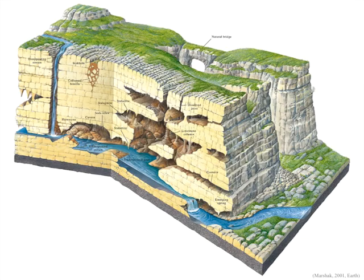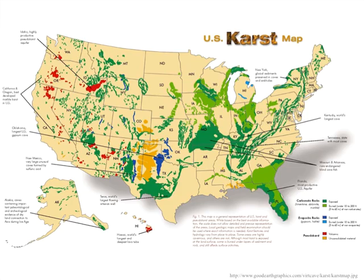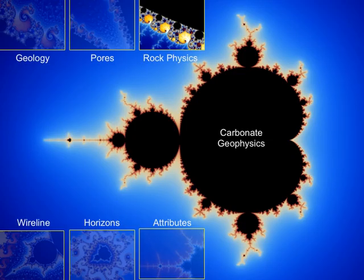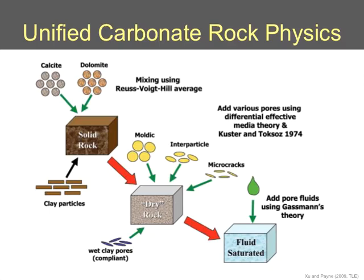One key feature of carbonates is that they are soluble and can be dissolved to form large cave systems and karst topography. This diagram shows many features of karst topography. When dealing with limestones around the world we are often looking at a paleo-karst landscape, which can be extremely complex and on seismic scale hard to interpret. Karst is common in the U.S. today, and modern examples serve as a guidebook toward understanding ancient karst.